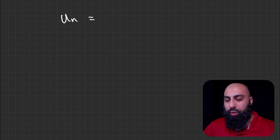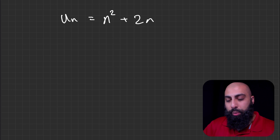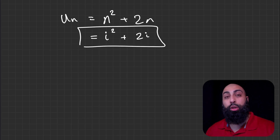The second way is to use sigma notation — the summation formula. We need to remember our quadratic sequence: the formula was n squared plus 2n. Because we're going to use the summation formula, it's normally written with i as the variable, so we convert to i squared plus 2i.